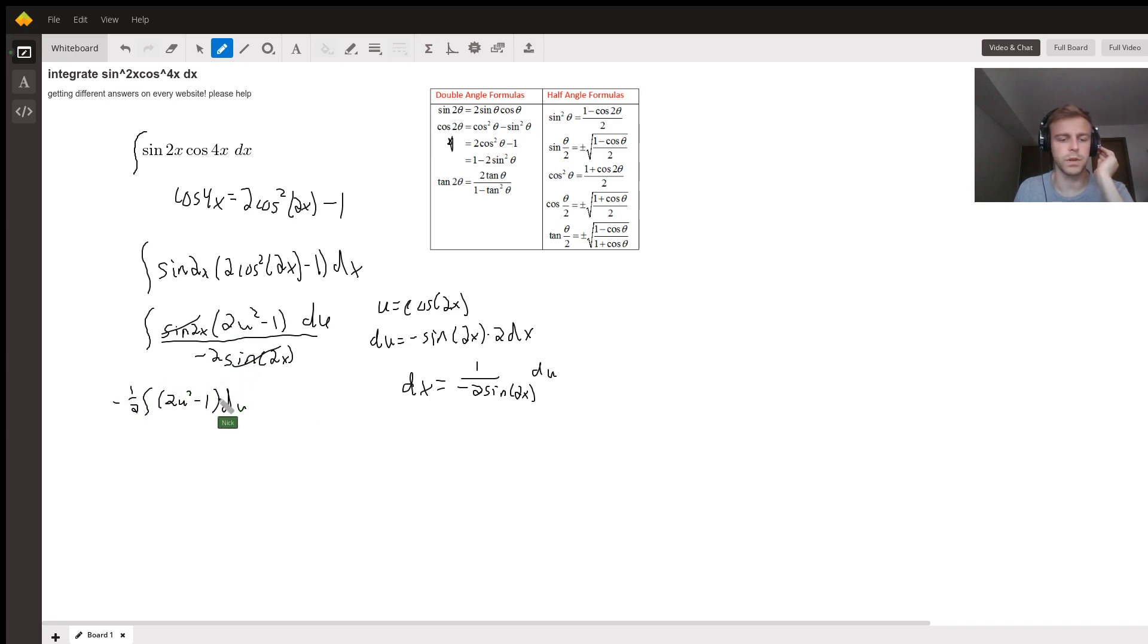And then you have the 2u² minus 1. The antiderivative of 2u² minus 1 is relatively easy to do—it's just power rule. So your answer will be negative 1/2 times what you get as an integrated result of this. I'll just jump through with the u's: that would be (2/3)u³ minus u.